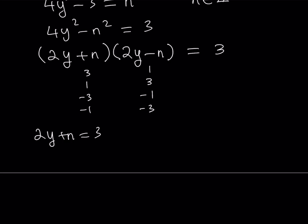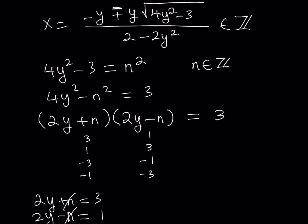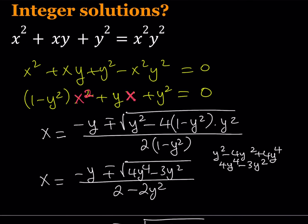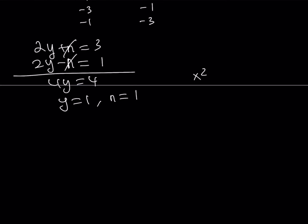If the first case scenario, from here we get 4y equals 4 and we get y equals 1. And obviously we get an n value too, n is going to be 1 in this case. But that doesn't really matter because we're interested in finding x. How do you find x if you know that y equals 1? You can refer to the original expression. We have x squared plus xy plus y squared equals x squared y squared. So if y equals 1, then you get x squared plus x plus 1 equals x squared. x squared cancels out and from here you get x equals negative 1. Great.